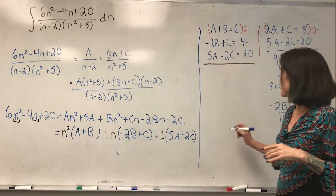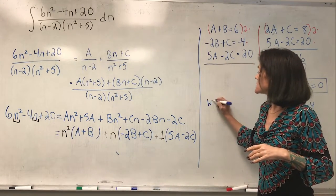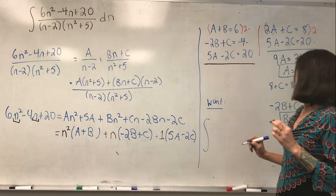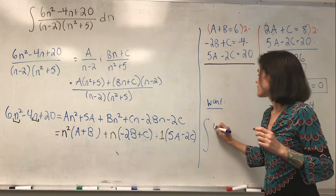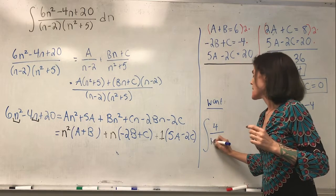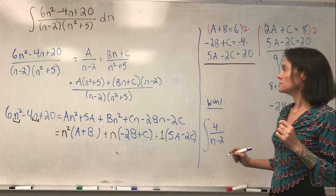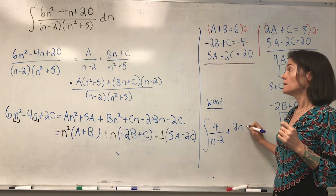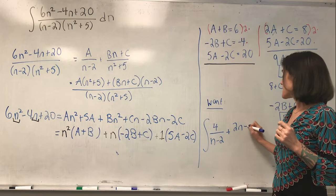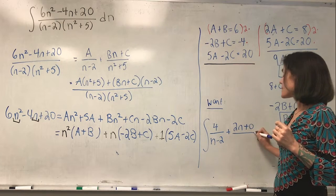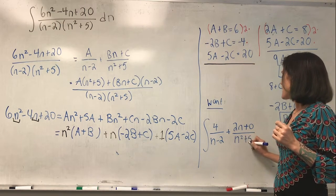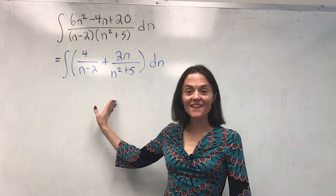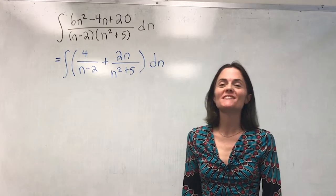What we want now is the integral: 4 over (n minus 2) plus 2n over (n squared plus 5), dn. This is what we need to integrate, and we found that through partial fractions.